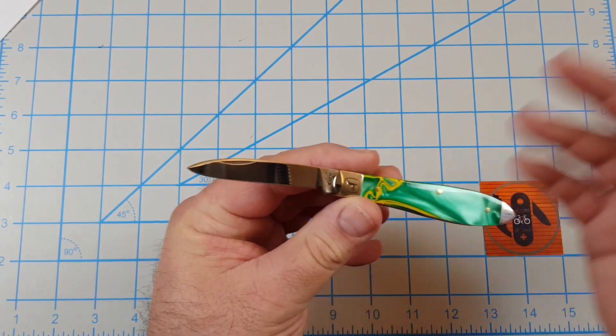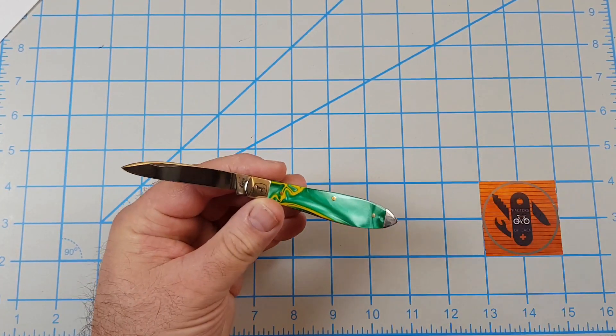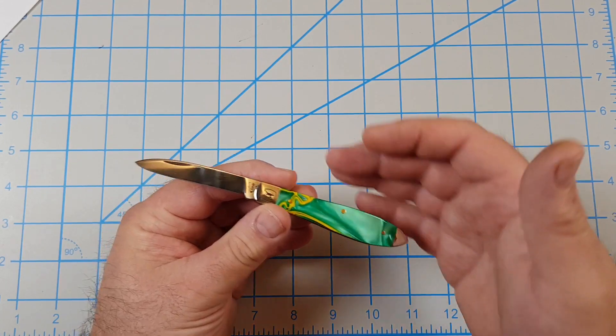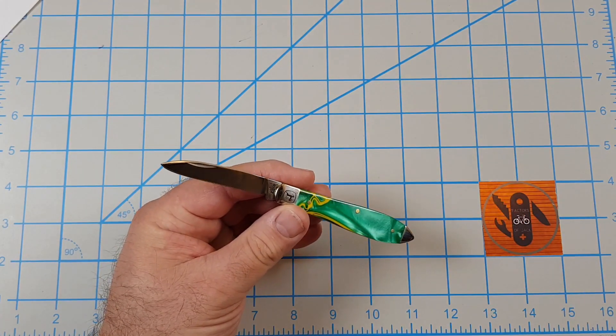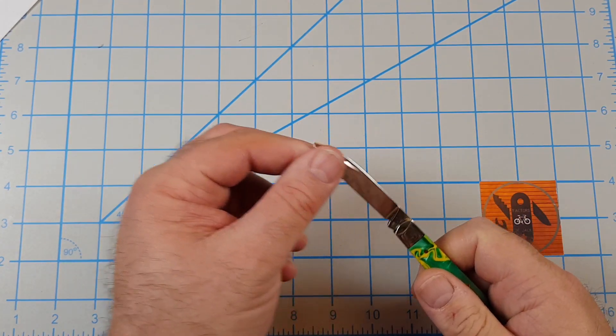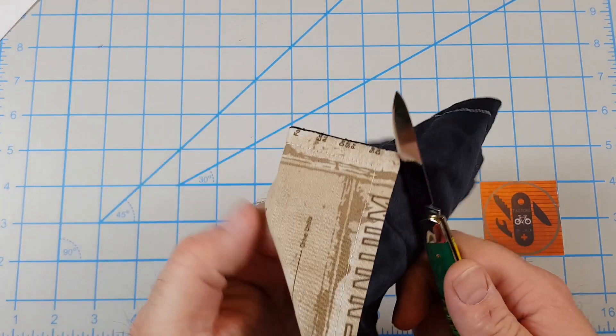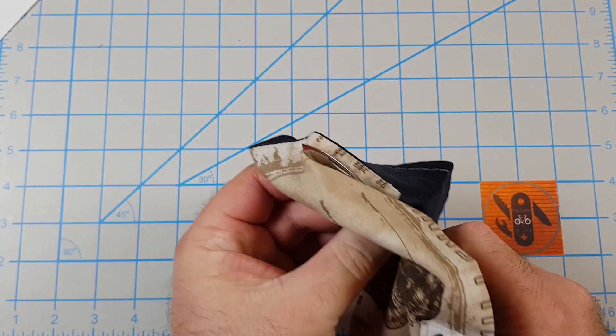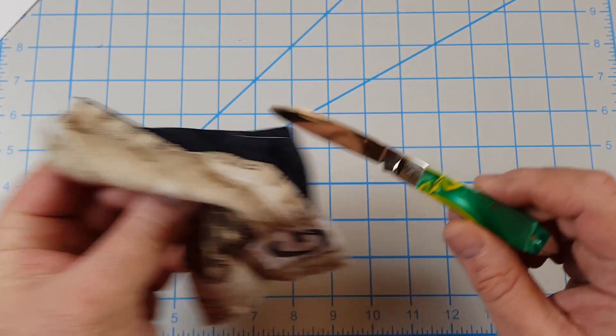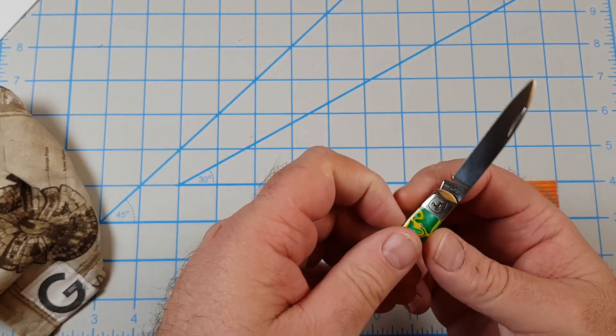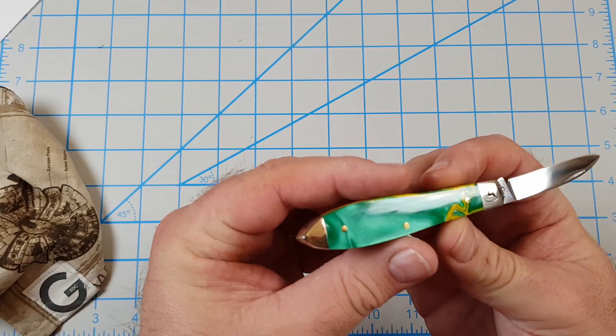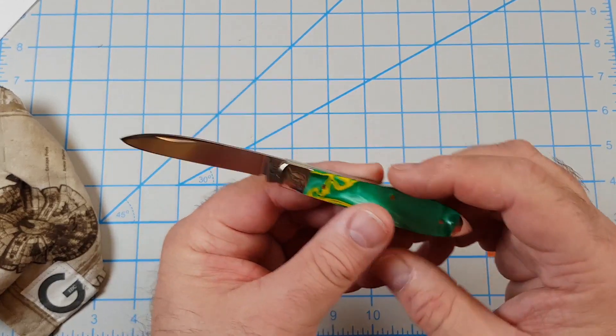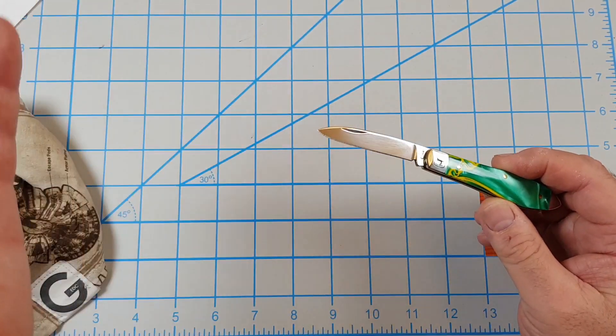I don't know how long edge retention is on it, but it's a Case knife - they last for years and years. I can't imagine it's too bad. I gotta admit though, the only thing is it is a fingerprint magnet. I'll make sure I wipe it down good before I pack it back up.